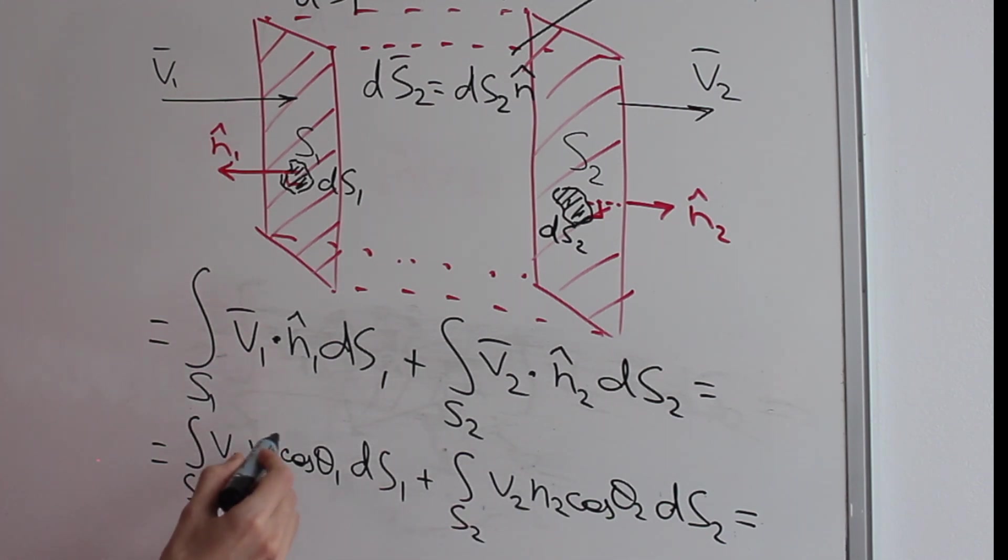Now remember that these are just the magnitudes of these vectors. What's the magnitude of n1? It's 1. Magnitude of n2 is 1. So we don't even have to write them. Now what's the cosine of the angle between v1 and n1?